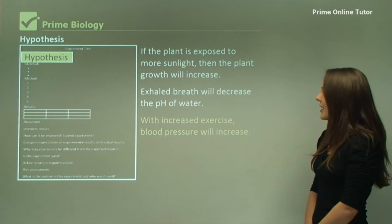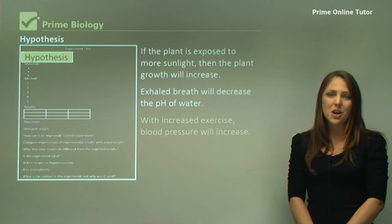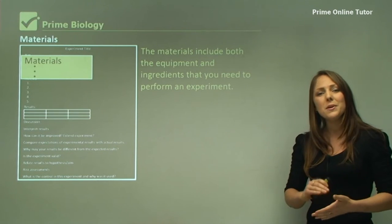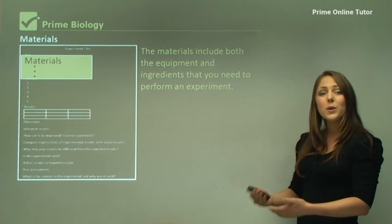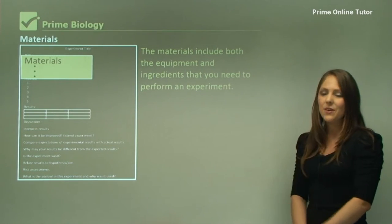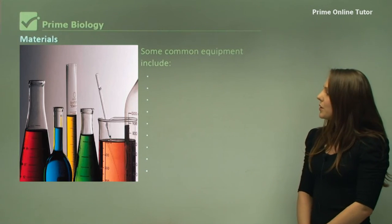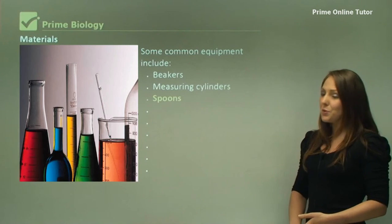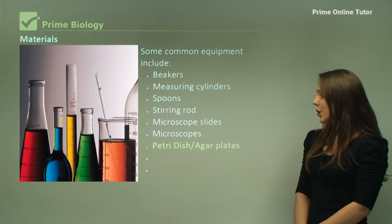Materials are written up in dot point format, which is very important so when you need to refer quickly, you can see it's dot points and it's very easy to understand. Some common equipment include beakers, measuring cylinders, spoons, stirring rods, microscope slides, and microscopes.